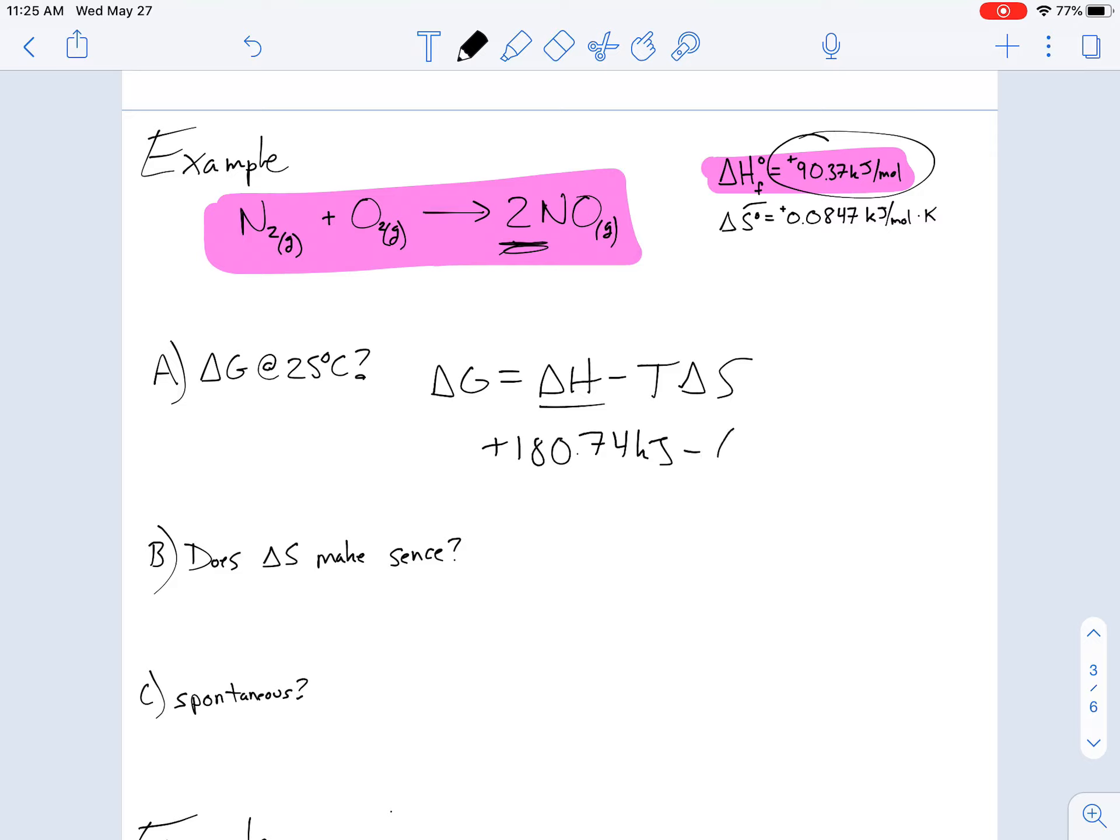And then subtracting this from my change in temperature, 298 K. Got to use Kelvin, as always. Times 0.0847 kilojoules per mole times Kelvin. Answer for delta G comes out to be positive 155.4 kilojoules per mole. If it's positive, this is a non-spontaneous event. This doesn't naturally occur. Is this spontaneous? No. It's positive.